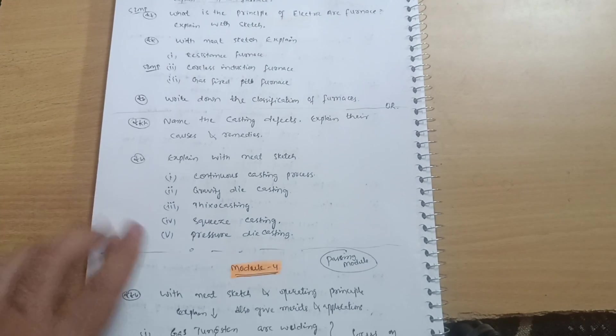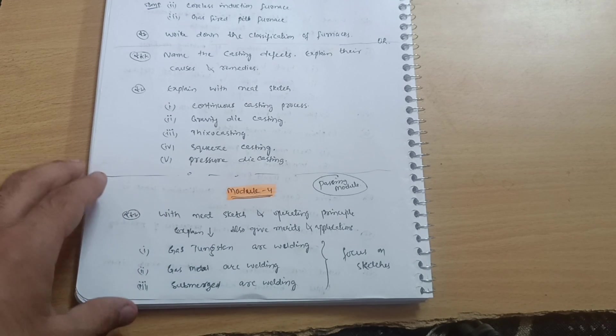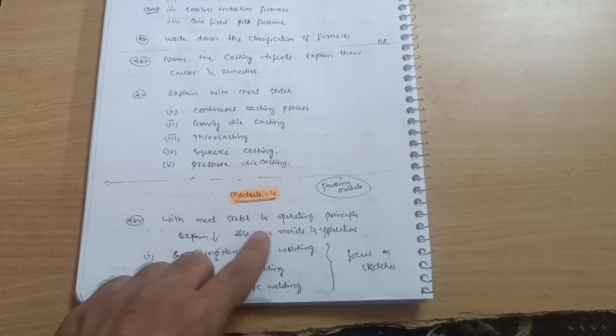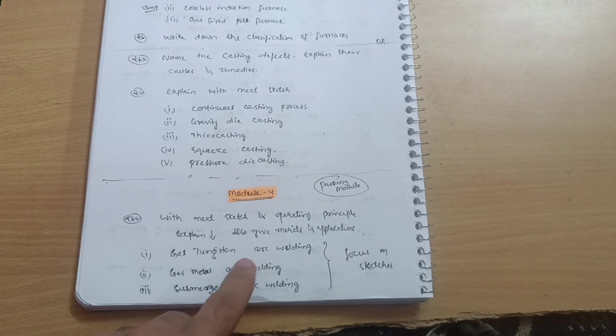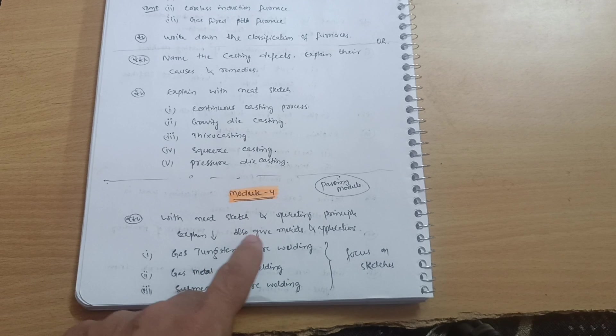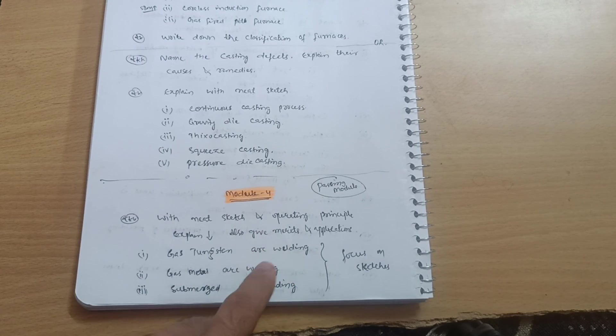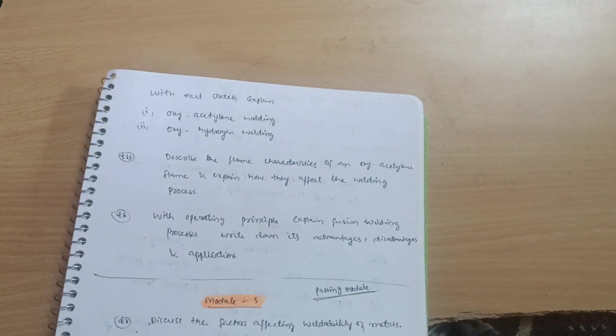Next passing module is Module 4. You have to cover some topics like with neat sketch and operating principle, explain gas tungsten arc welding and gas metal arc welding, submerged arc welding. Also you have to write down the merits and applications, advantages or applications for these three processes, and also focus on the sketches for these welding processes.